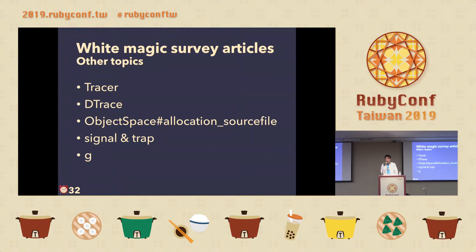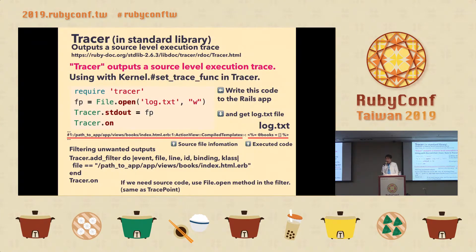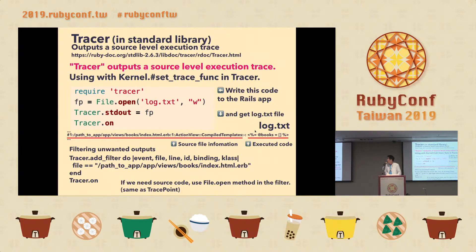Now let's talk about white magic survey articles. First, Tracer — it's a standard library that outputs a source-level execution trace using Kernel#set_trace_func. Write this code in your Rails application, get a log.txt file, and in the log you can see the source file information and the executed code. You can also filter unwanted output by using a block.